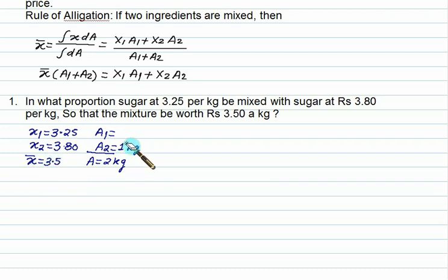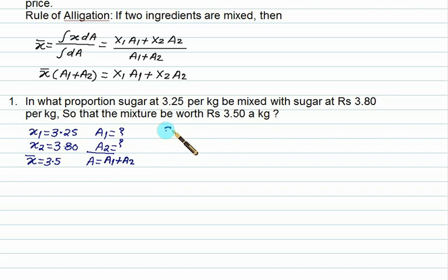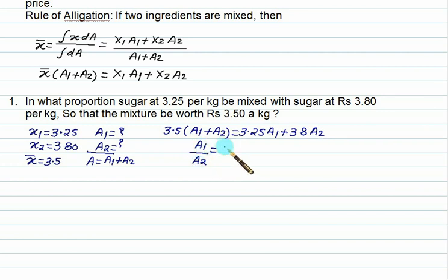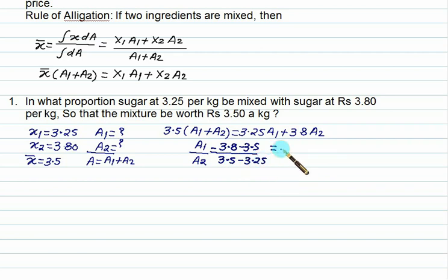Now we don't know a1 and we don't know a2 — we want this ratio. So: 3.5 into a1 plus a2 equals 3.25·a1 plus 3.8·a2. You can separate variables and find a1 by a2: a2 times (3.8 minus 3.5) divided by a1 equals (3.5 minus 3.25). So the required ratio is 6 by 5.